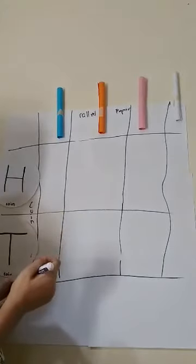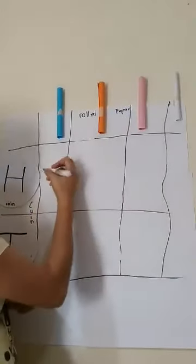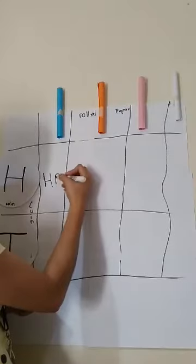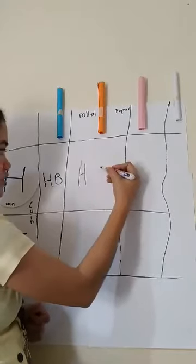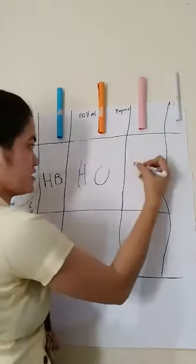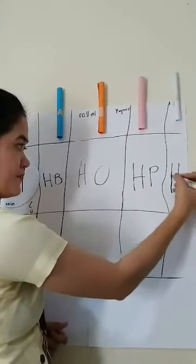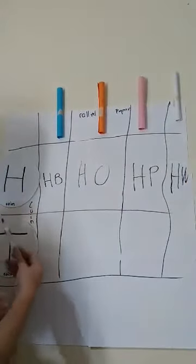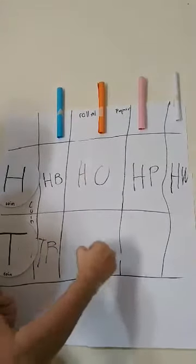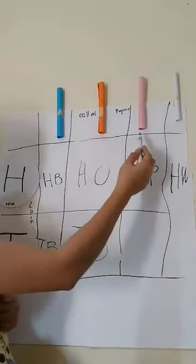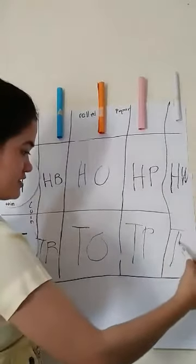Now we have to intersect or combine the outcomes. Starting with head: head and blue, head and orange, head and pink, head and white. Now let's go to tail: tail and blue, tail and orange, tail and pink, tail and white.